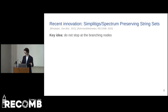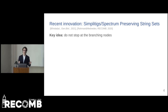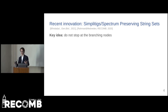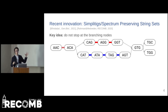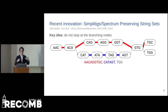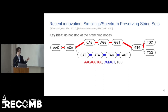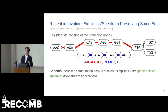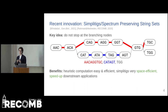To resolve this issue, two recent works have simultaneously proposed the same key idea: not to stop at branching nodes, but rather compact along vertex-disjoint paths in the graph. In our example graph with unitigs, we can go from six unitigs down to only three simplitigs, while not stopping at the branching nodes. The transition from unitigs to simplitigs has brought many gains — they are much easier to heuristically compute, they are more space-efficient, and this has sped up downstream applications.